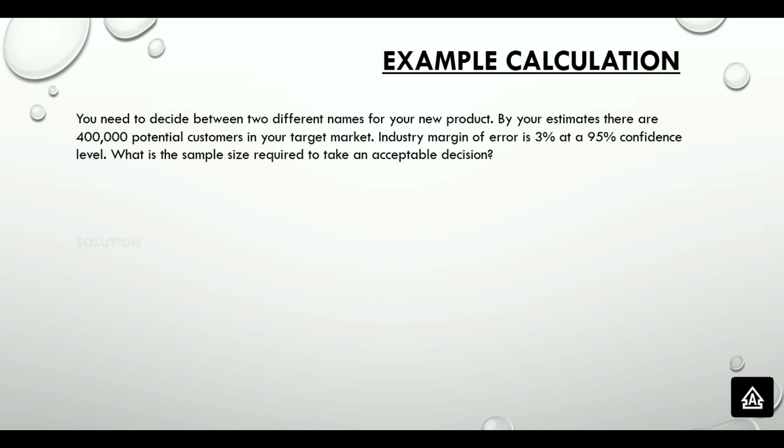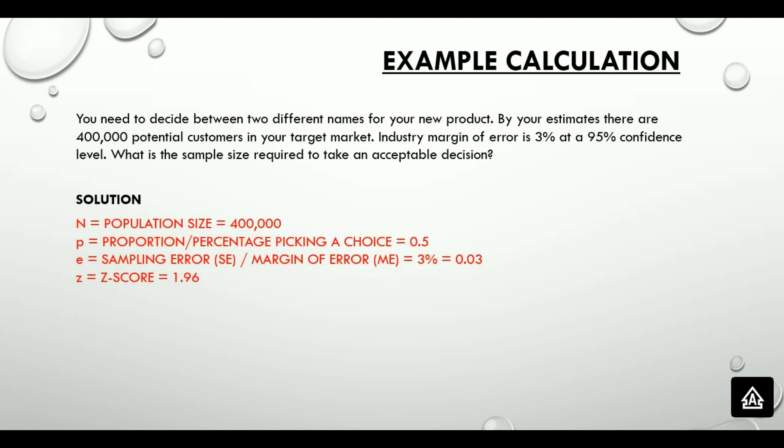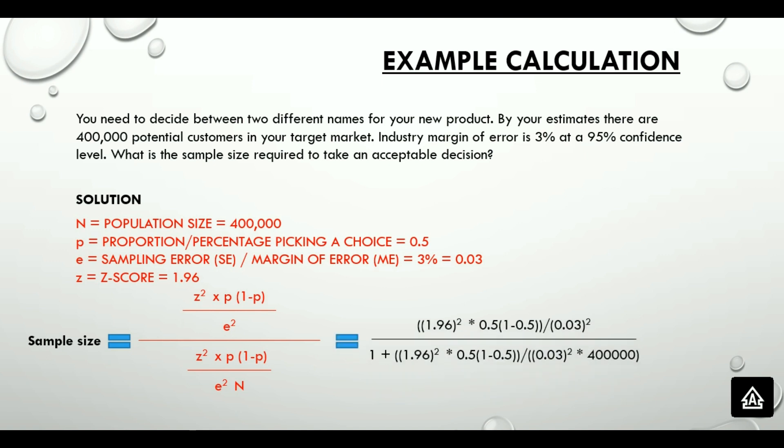N is 400,000. Sampling error is 3%, that is 0.03. The proportion picking a choice, that is P, we are assuming it to be 50%, because there could only be two choices. Z-score at 95% confidence level from the previous table that we saw will be 1.96. So, putting all these parameters in the formula that we have, the sample size required comes to 1064.